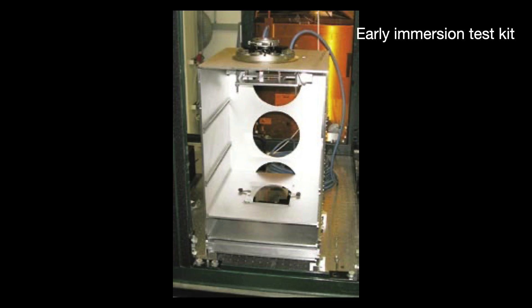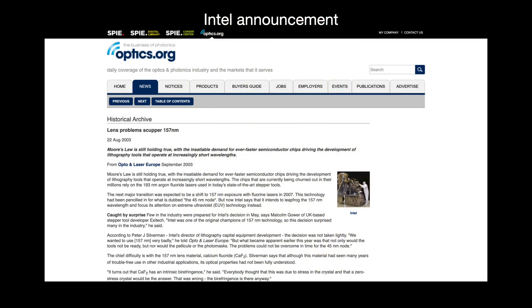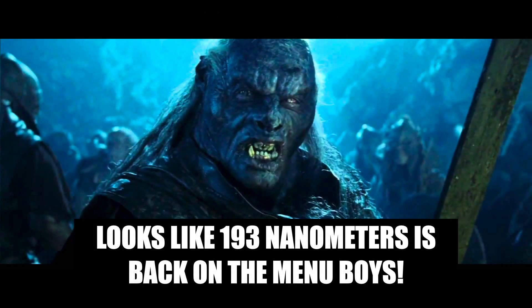For a while, the industry hemmed and hawed between 157 nanometer and immersion. Then in May 2003, Intel dropped 157 and the industry soon followed. Everyone pivoted to developing 193i technology fast enough to make the next major process node. Looks like 193nm was back on the menu, boys.